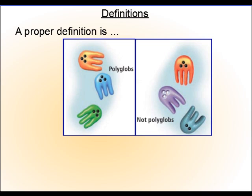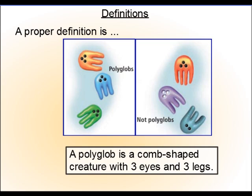Therefore, a good definition would be a polyglob is a comb-shaped creature with three eyes and three legs. And I added in comb shape just to be a little more descriptive.